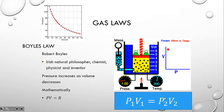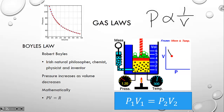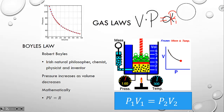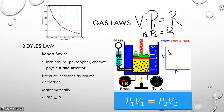Another phenomenon we notice with gases is that when you reduce the pressure of a gas, the volume increases. So the pressure of a gas is inversely proportional to its volume: when pressure goes up, volume goes down, and when volume goes up, pressure decreases. We attribute this to Robert Boyle, the Irish philosopher and chemist. Mathematically, when you have a proportion you can replace it with a constant, so pressure times volume always equals the same constant for an ideal gas.